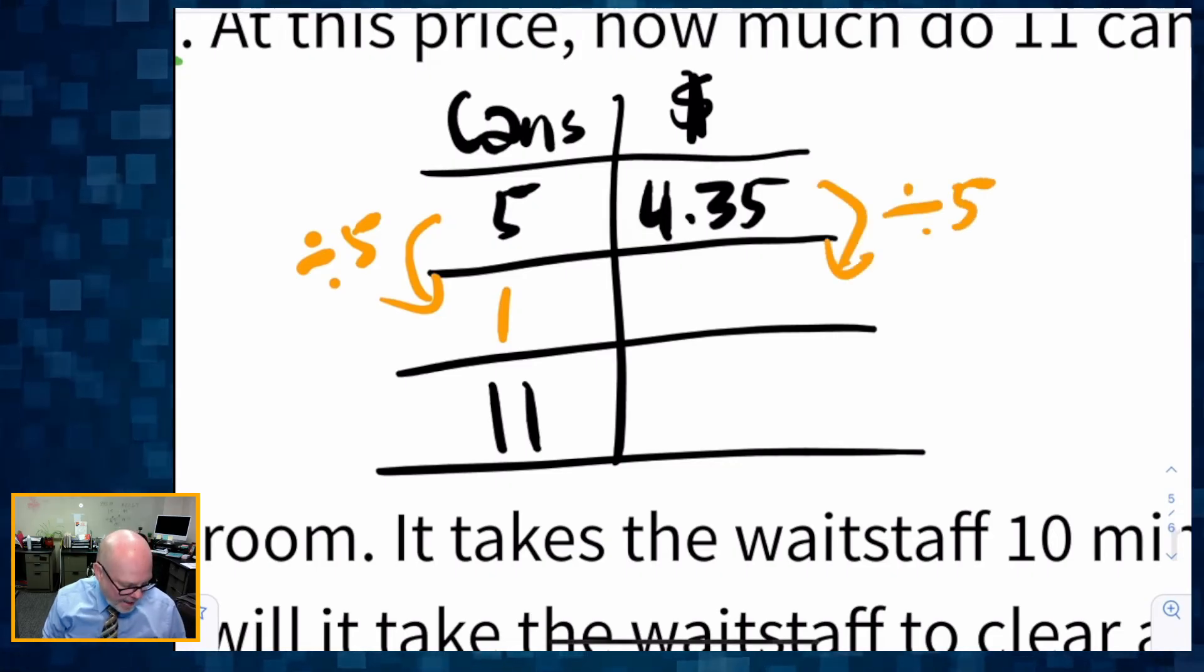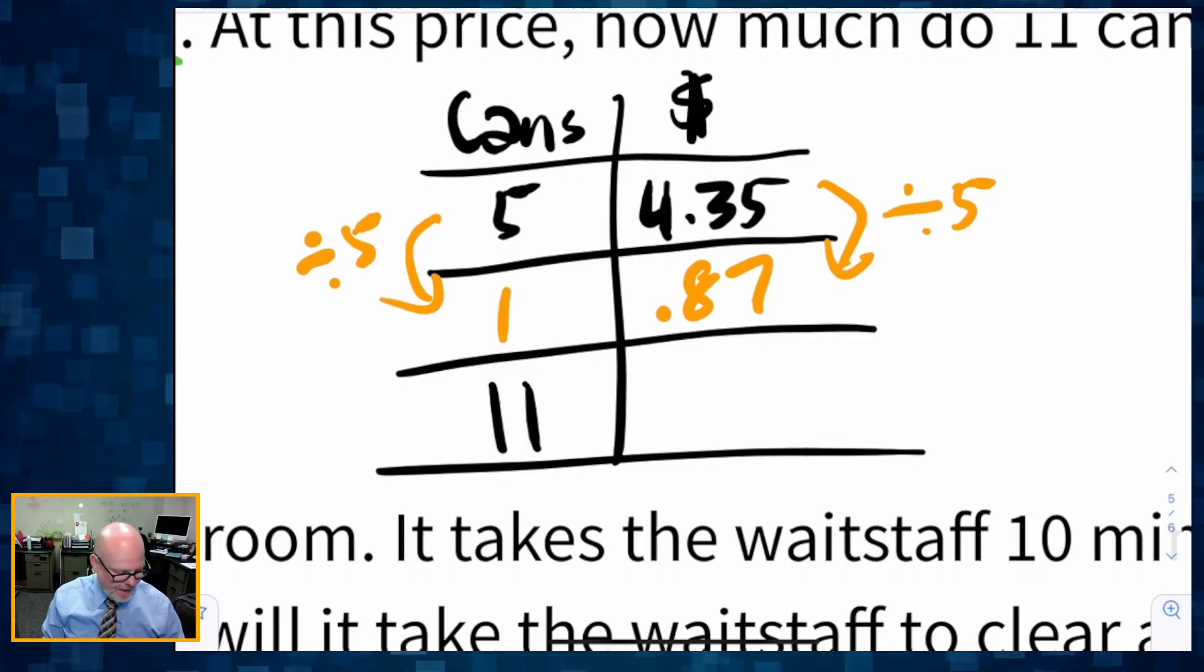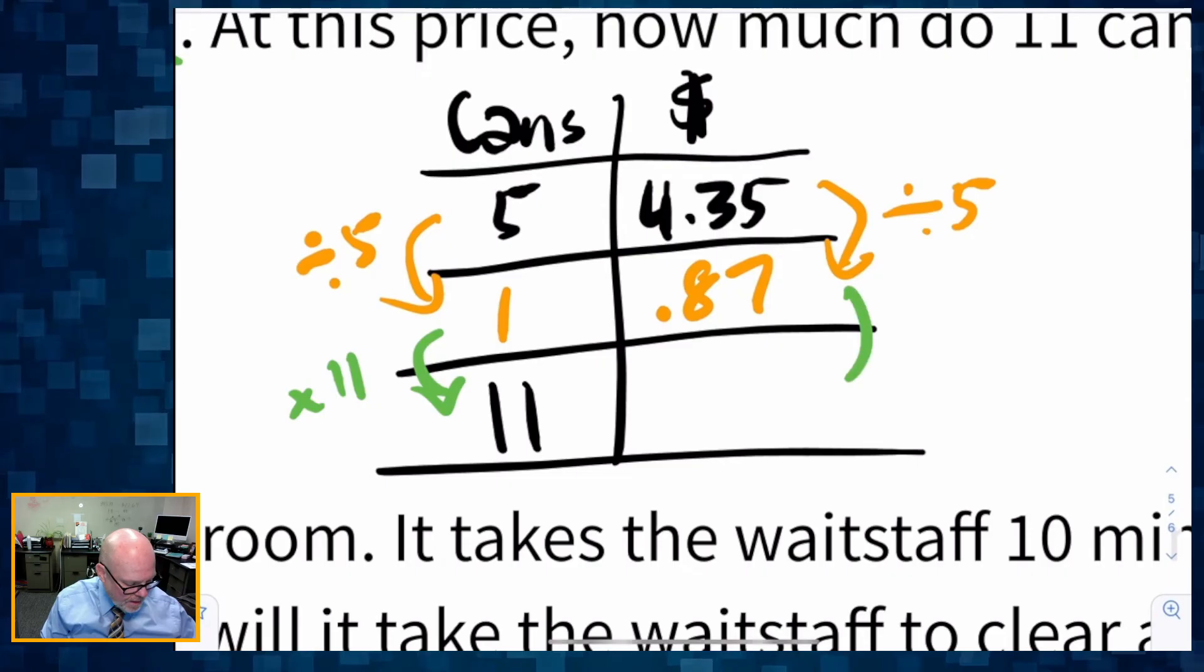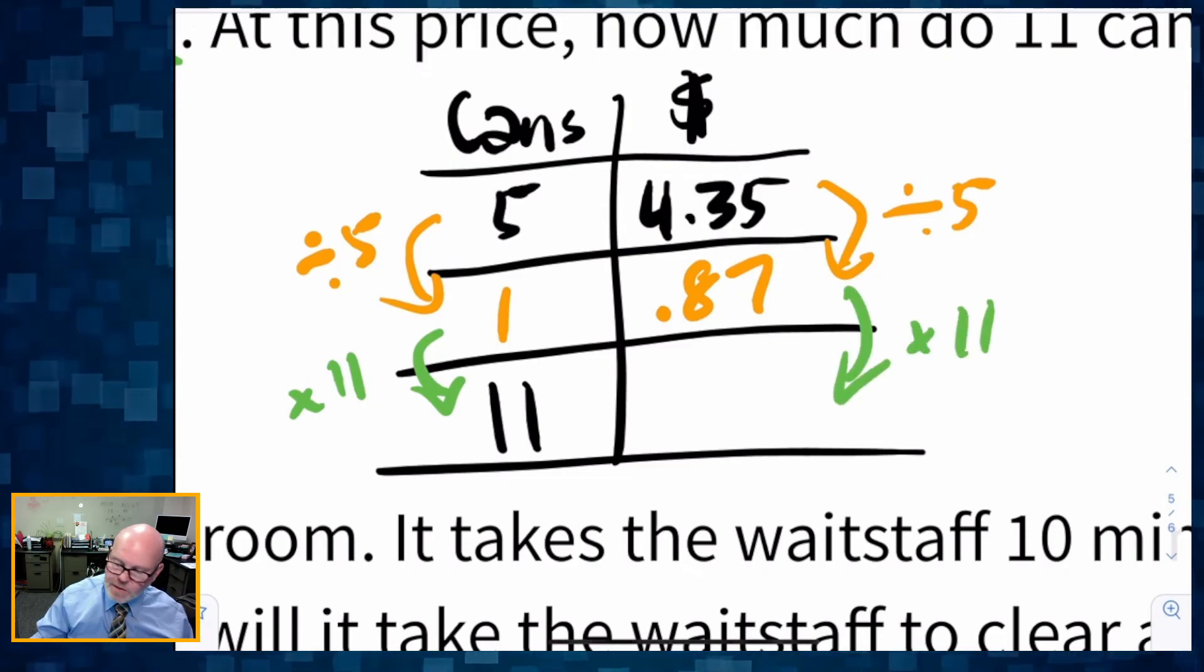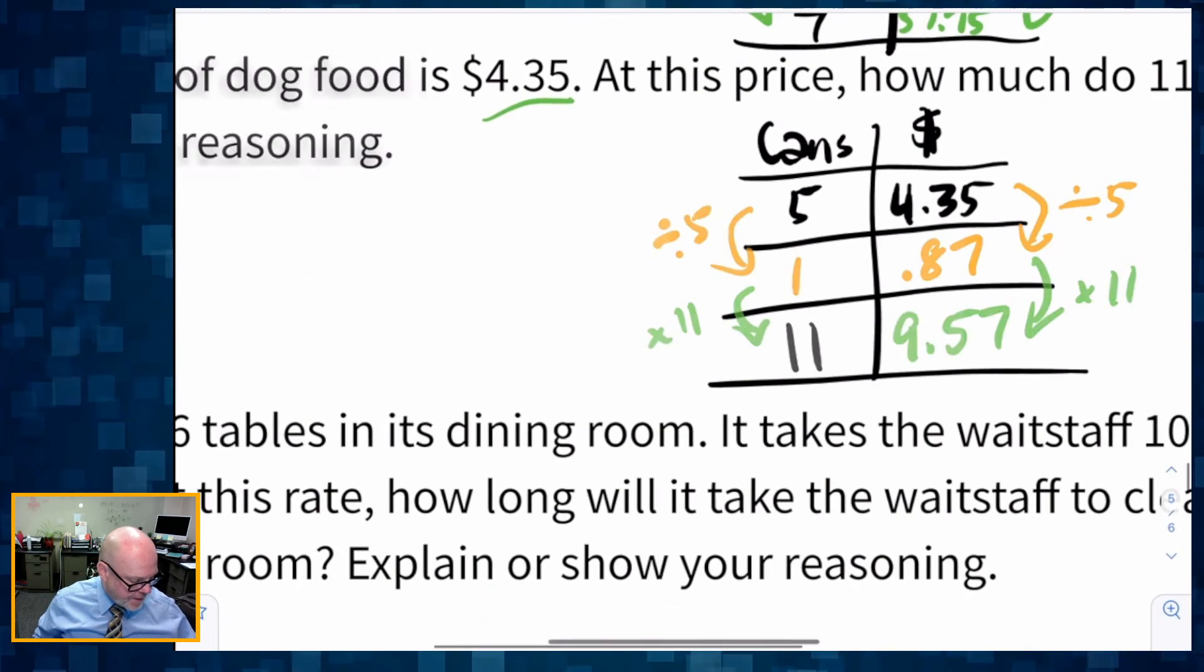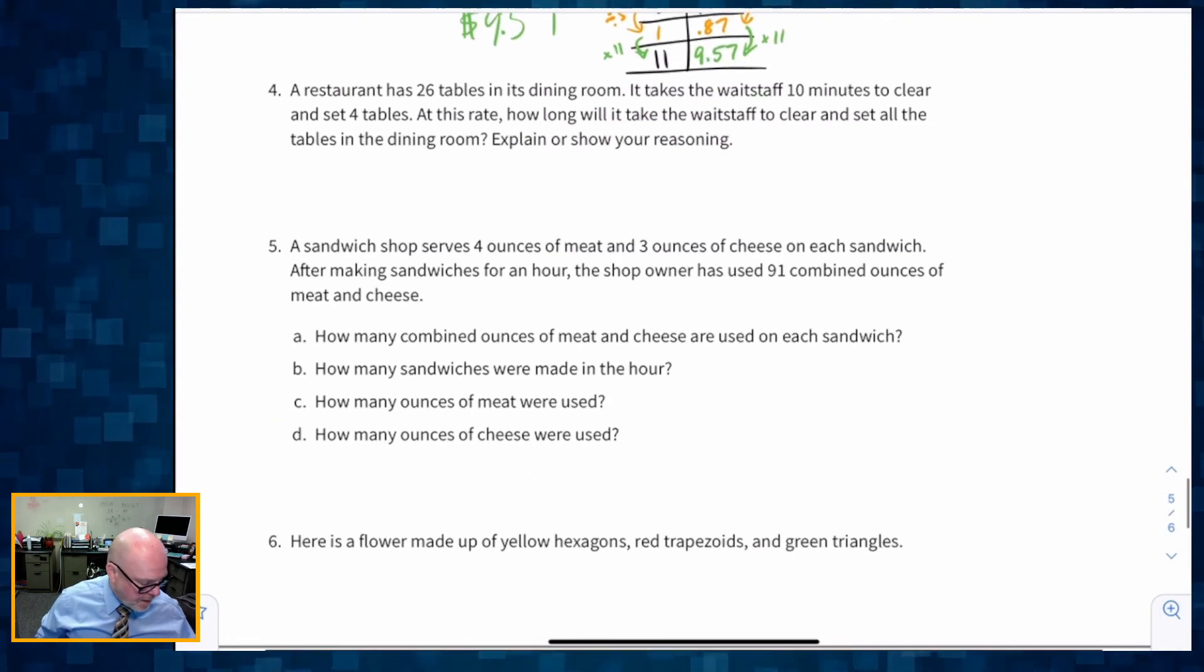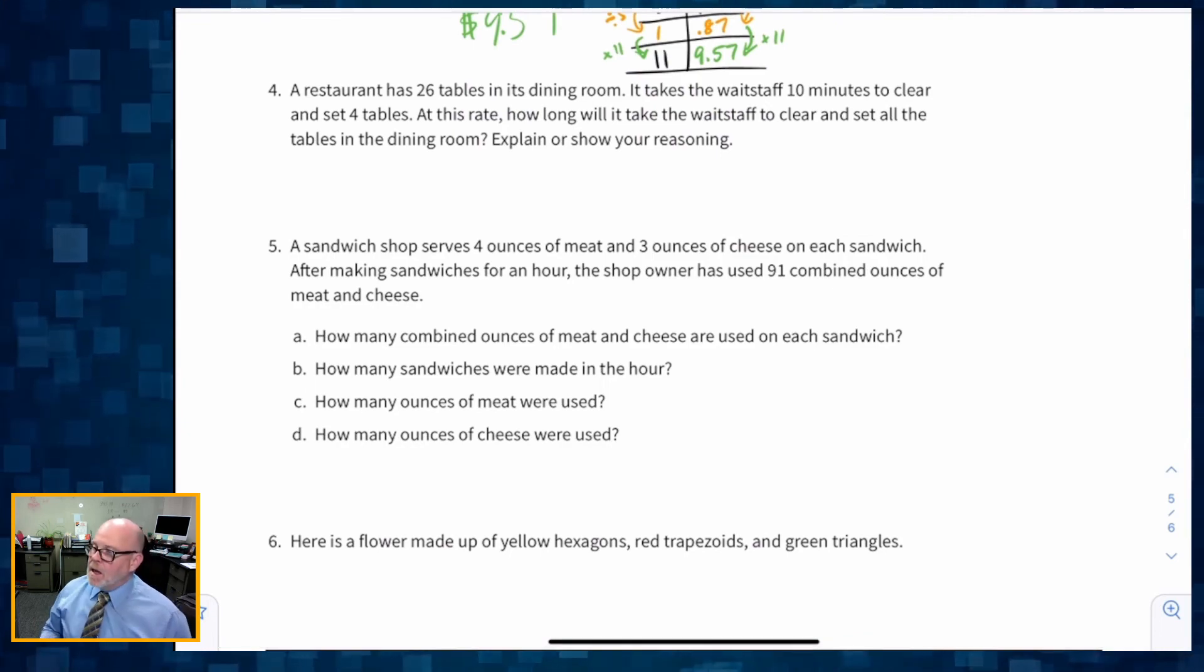Once again, I'm going to scale it down to a unit rate. I'm going to divide by five. That gives me one can. Divide by five gives me 87 cents, I think. I'm right. I did it in my head. 4.35 divided by five. Yeah, 87 cents. And now all I have to do is multiply and scale it up. Multiply by 11. And that's going to give me the cost for 11 cans, which is $9.57. We're chugging away here.